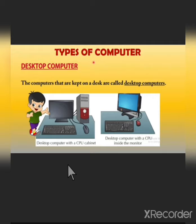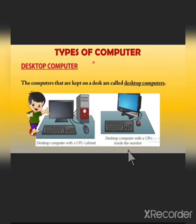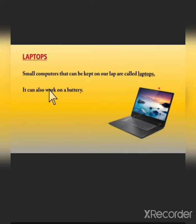Now let's revise the types of computers. In the first picture you can see a desktop computer with a CPU cabinet. In the second picture you will see a desktop computer with the CPU inside the monitor — it does not have a CPU attached separately with the monitor.